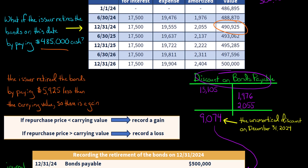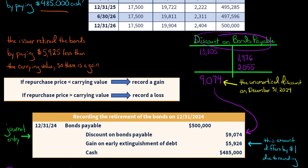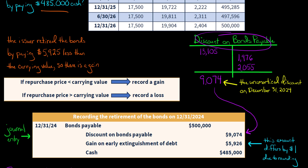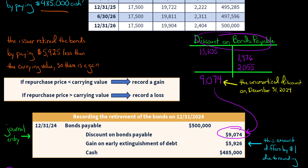Here is the journal entry to record the retirement of the bonds. We debit bonds payable for $500,000 because the company no longer owes that face value. We credit cash for $485,000 since that's the amount paid to retire the bonds. We also credit the discount on bonds payable for $9,074 — that's the unamortized amount that would have been amortized over future periods, but since the bonds are retired early, we remove it all at once from the balance sheet.